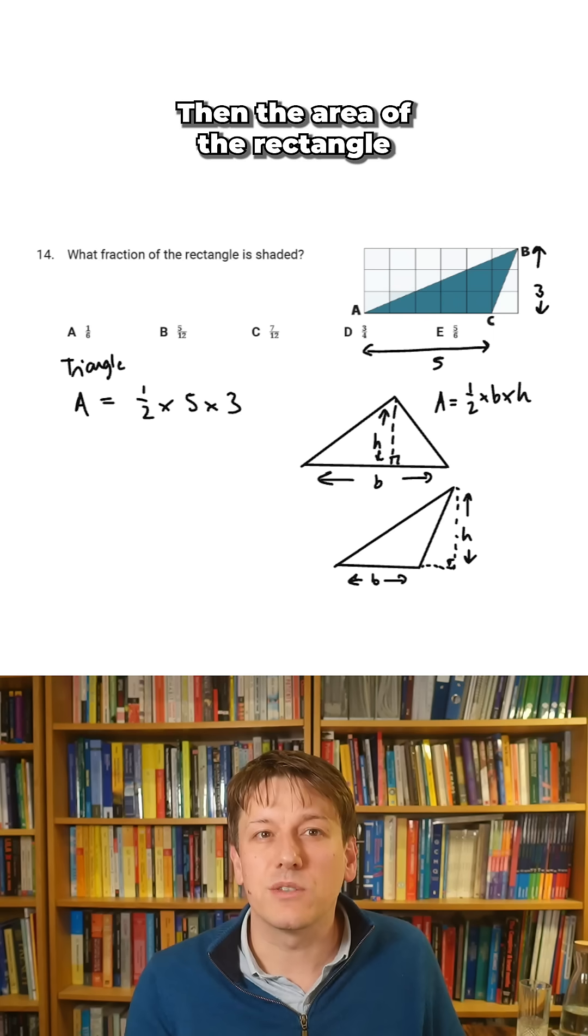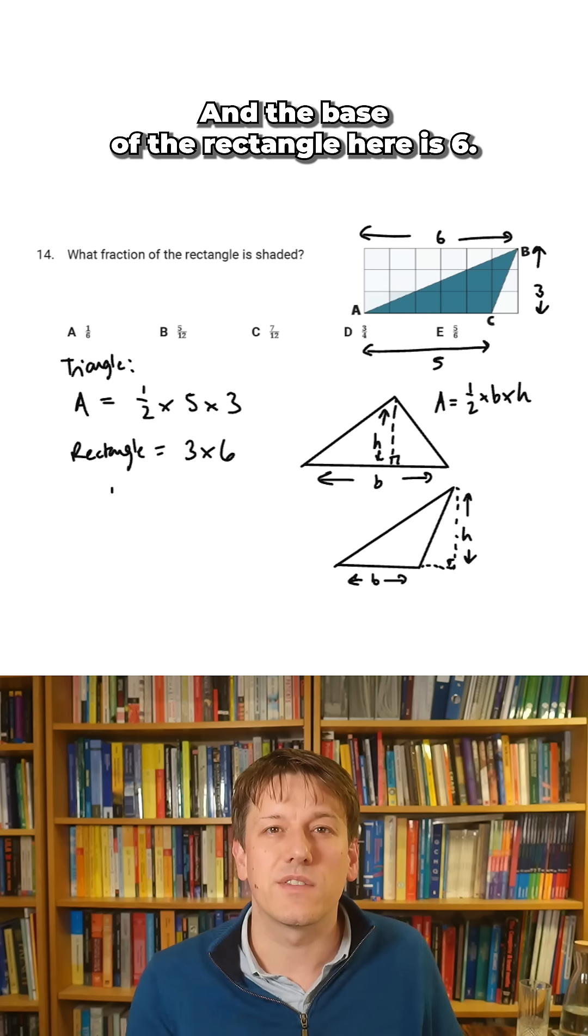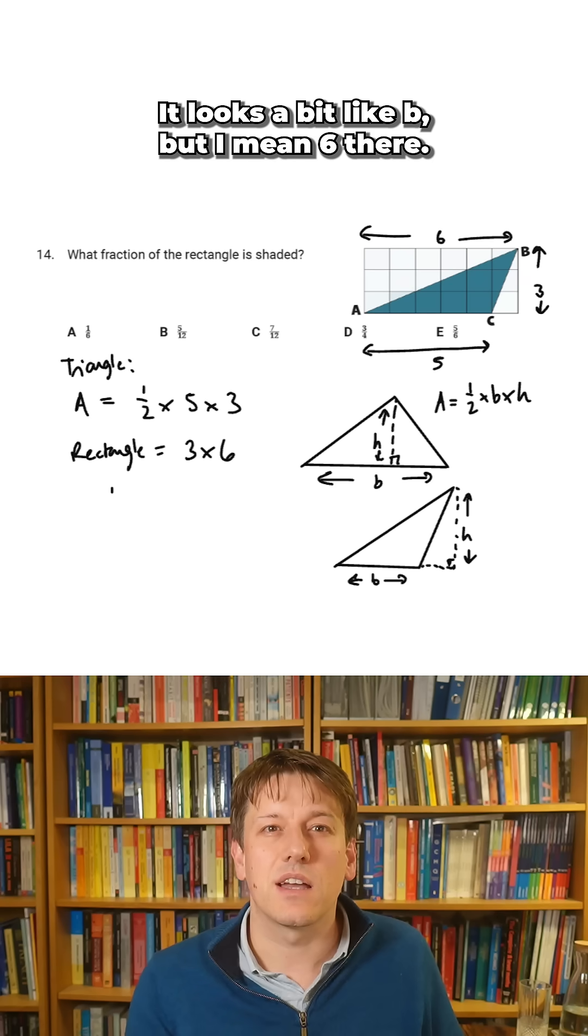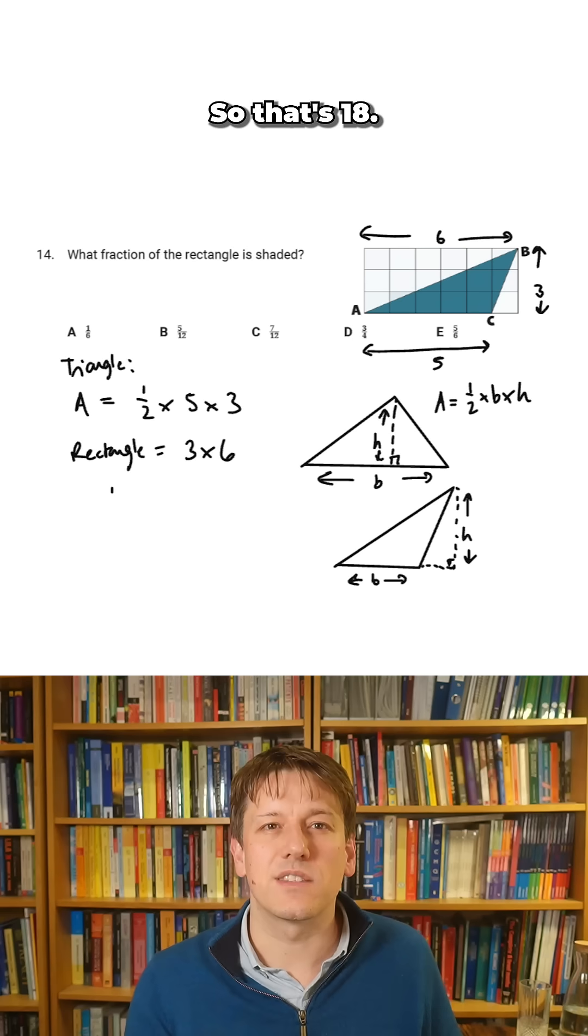Then the area of the rectangle is just base times height, of course, and the base of the rectangle here is six. It looks a bit like a B, but I mean a six there, also the base, I suppose. So that's 18.